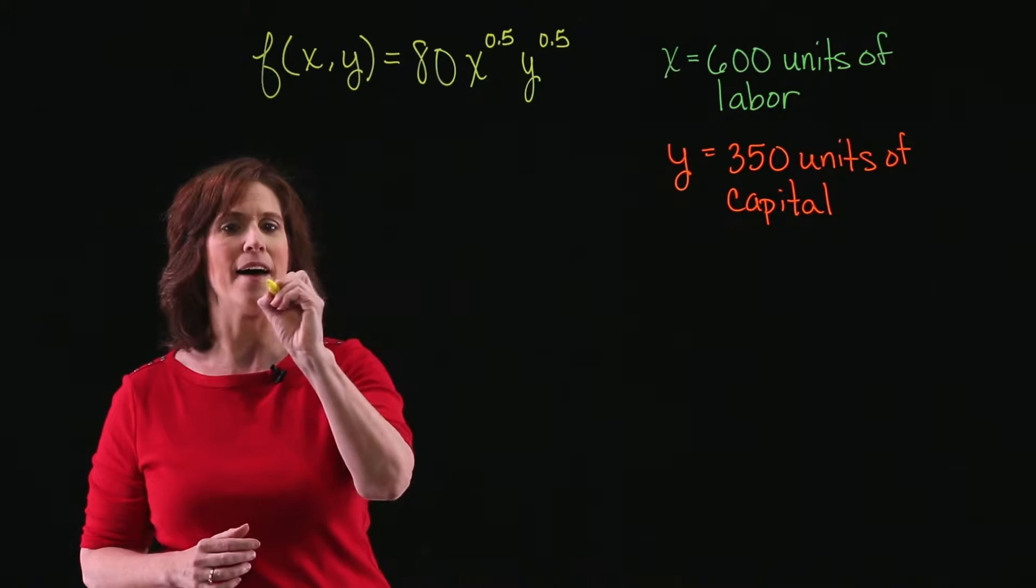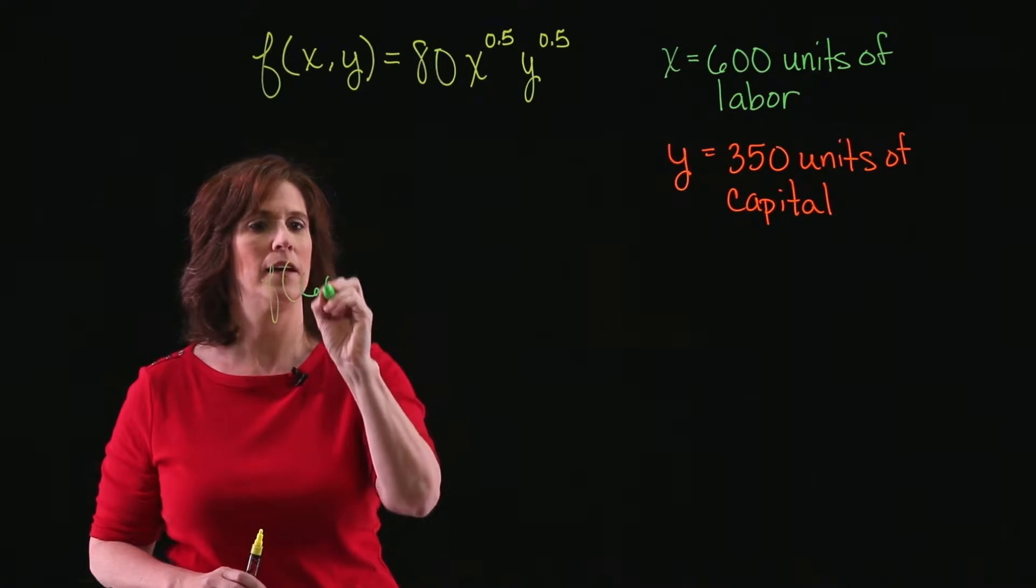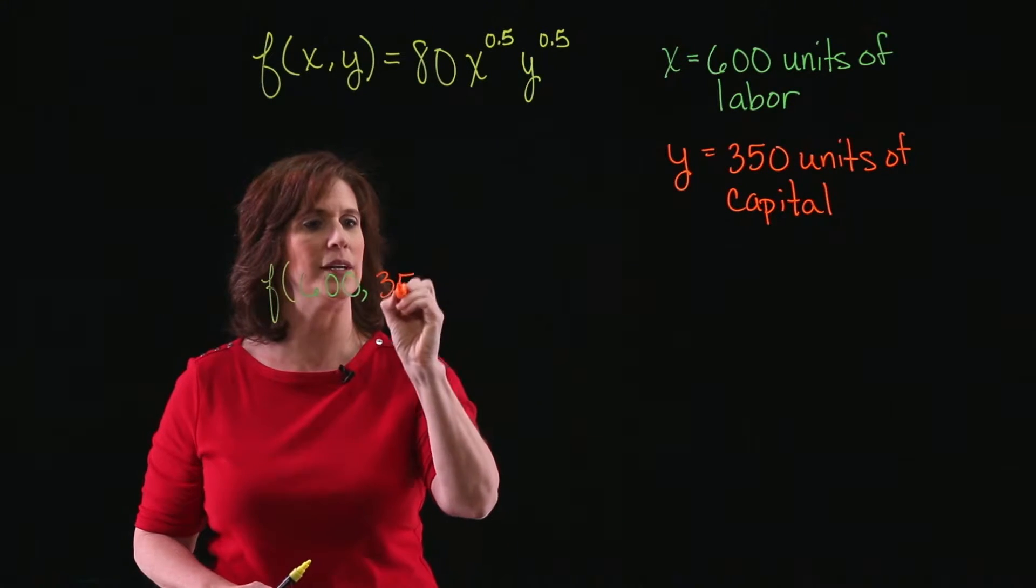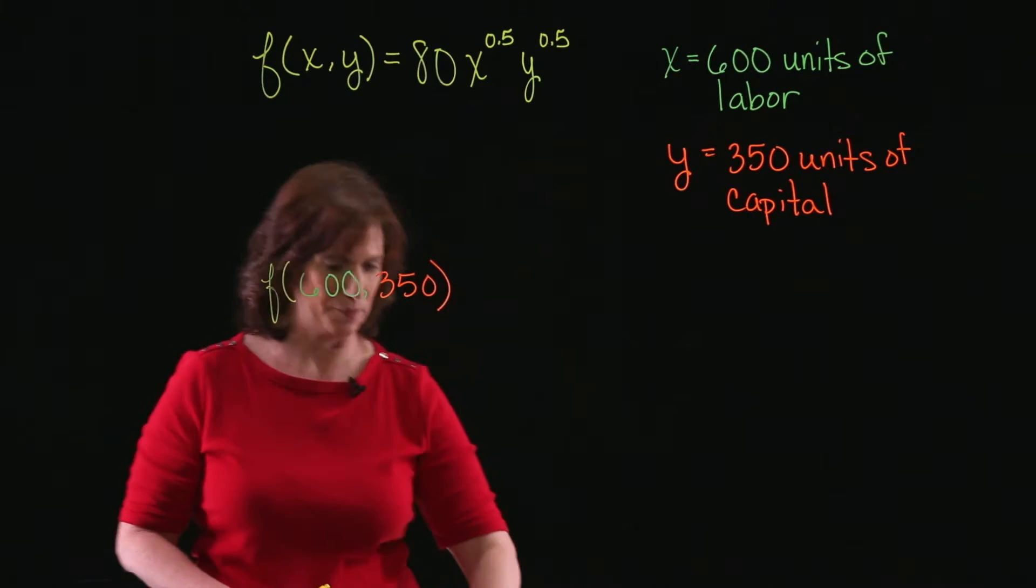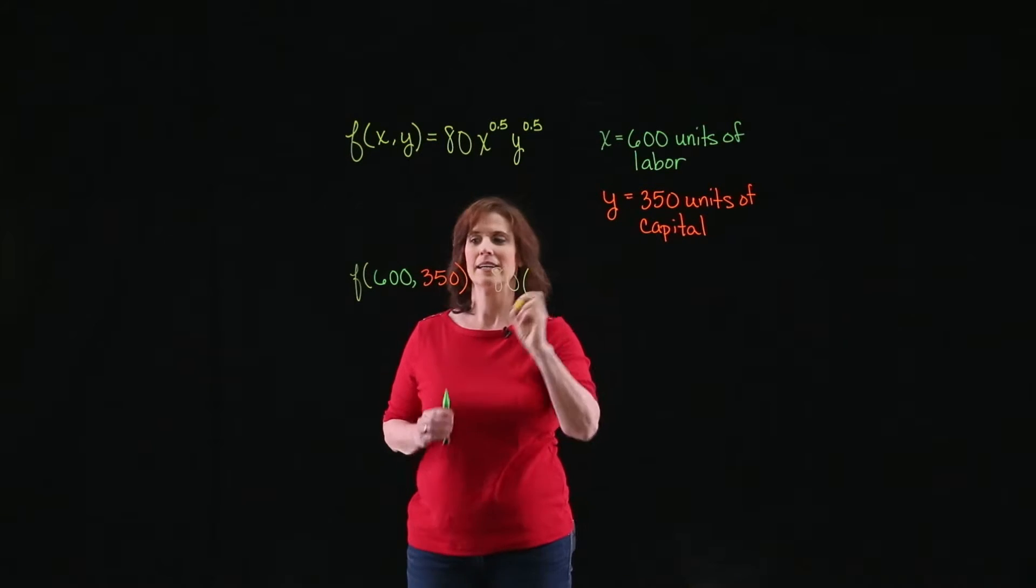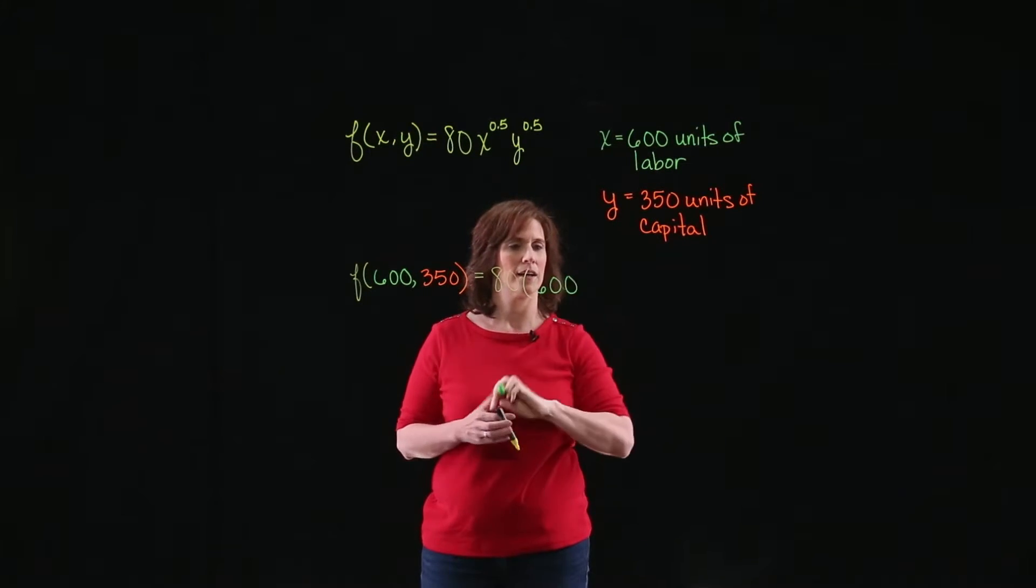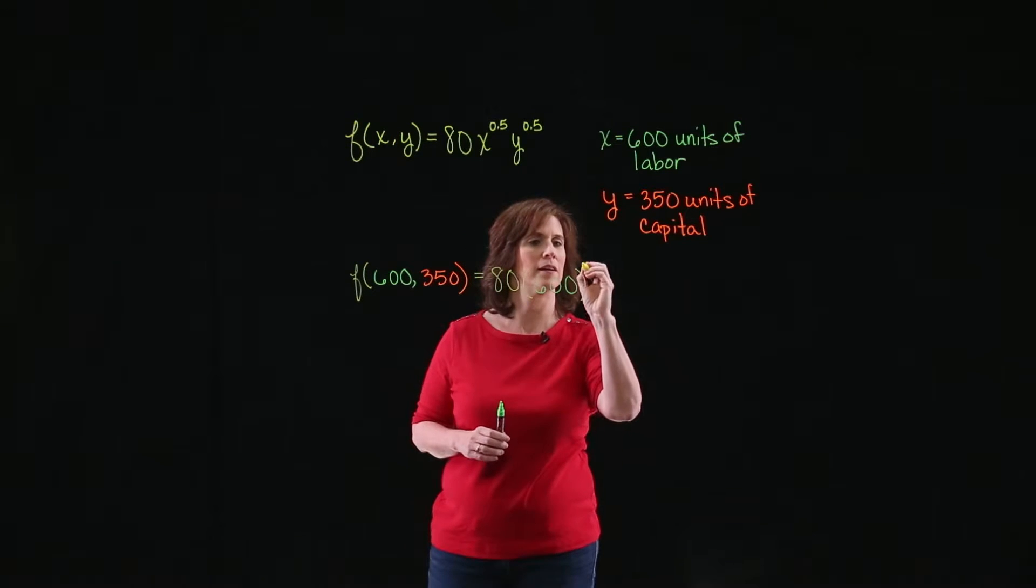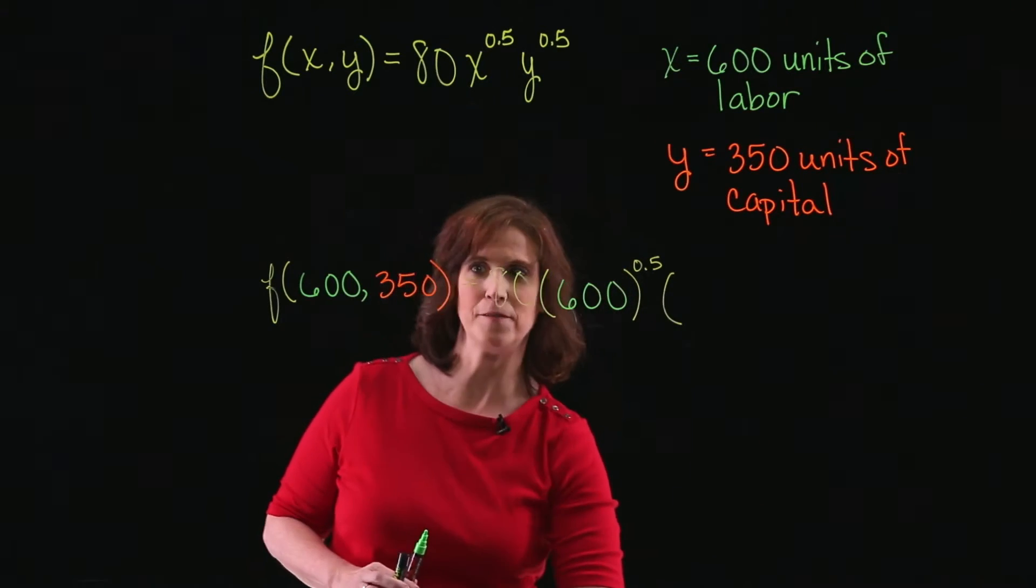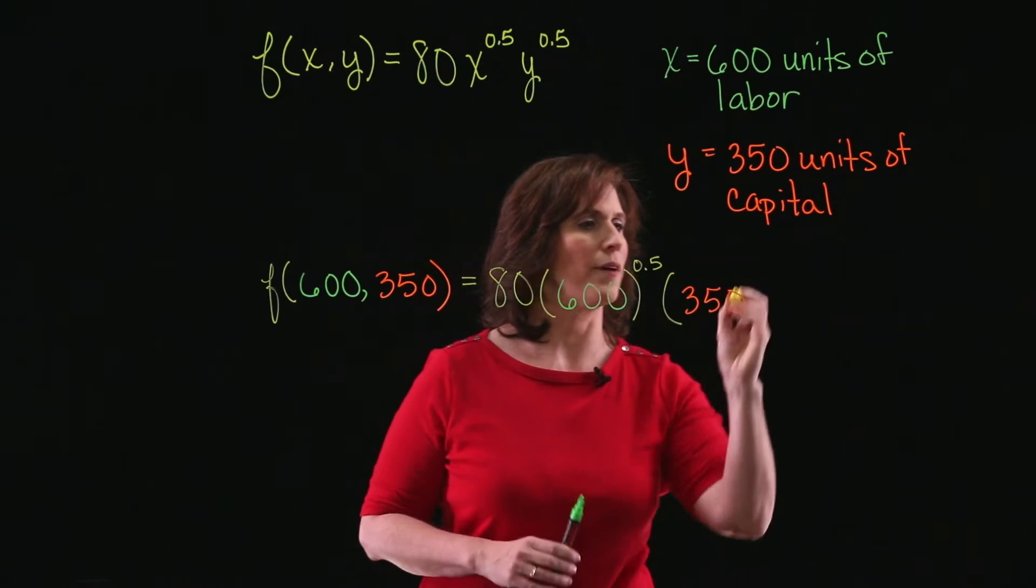So we have f of, and this is going to be 600 units of labor and 350 units of capital, which is equal to 80 times 600 to the 0.5 power times 350 to the 0.5 power.